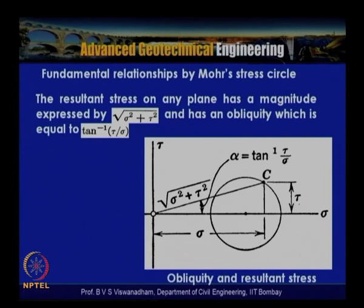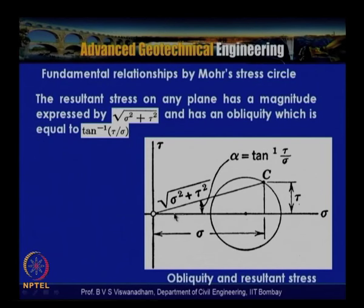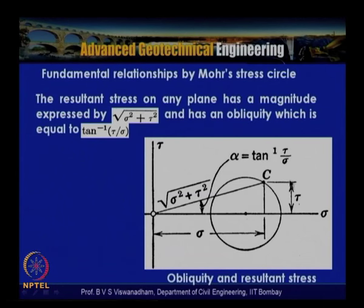The resultant stress on any plane has a magnitude of sqrt(sigma squared plus tau squared) at any point on the Mohr circle, and has an obliquity angle alpha equal to tan inverse of (tau / sigma). From the origin on the sigma axis, a line drawn to a point c on the Mohr circle has length equal to the resultant stress, and the angle it makes with the sigma axis is the angle of obliquity.